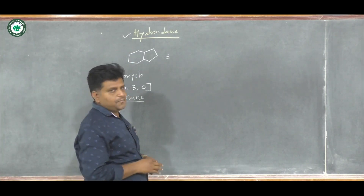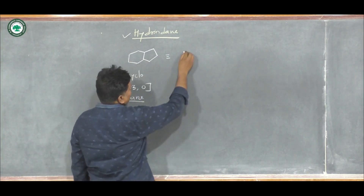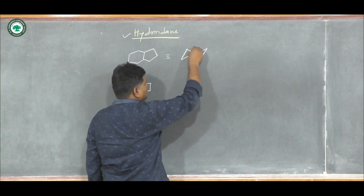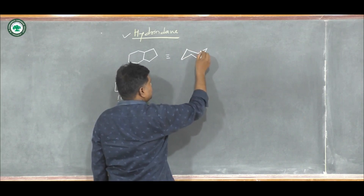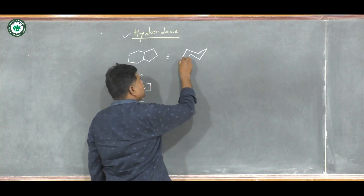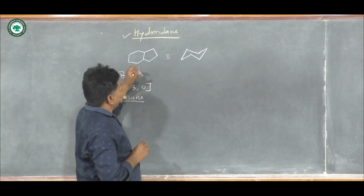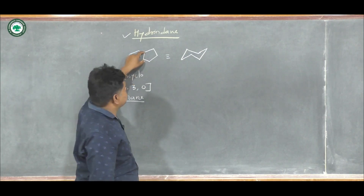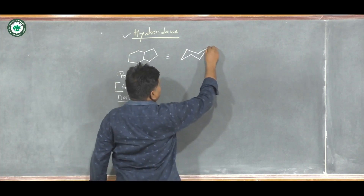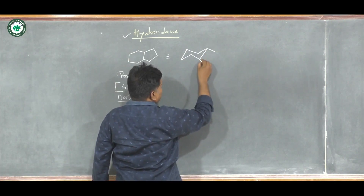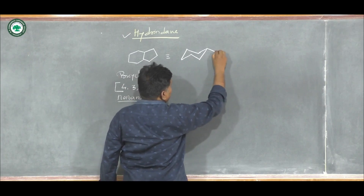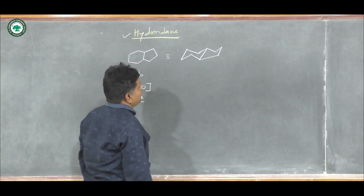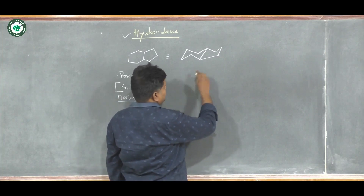Now let us try to convert the simple form of hydrindane into the chair conformation. Here we try to convert that structure into the chair conformation. This is a six-membered ring having two common carbon atoms which are also part of the five-membered ring system.